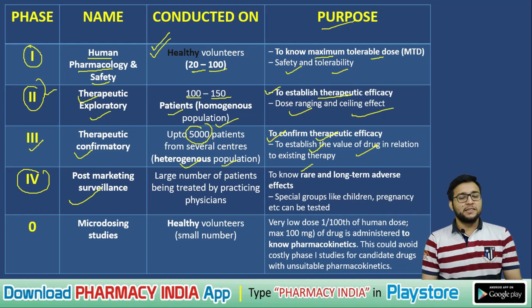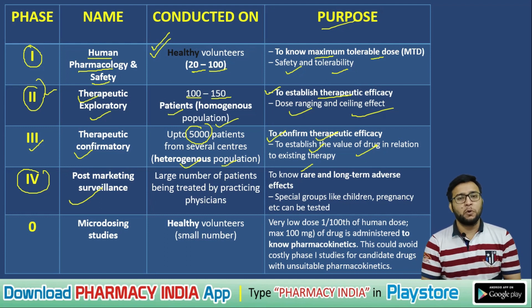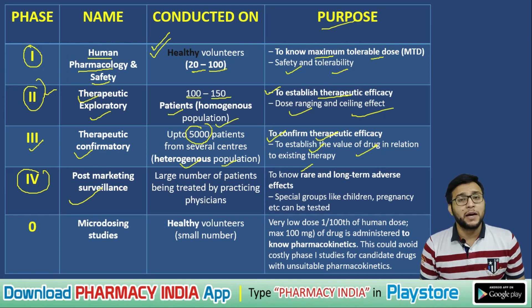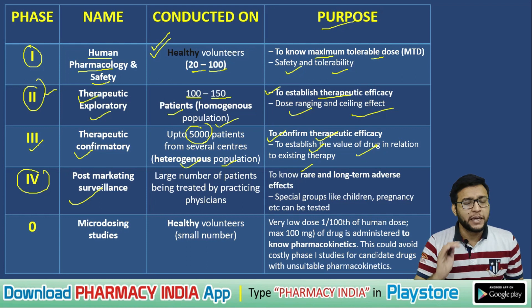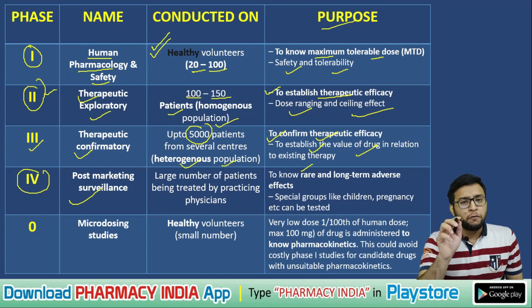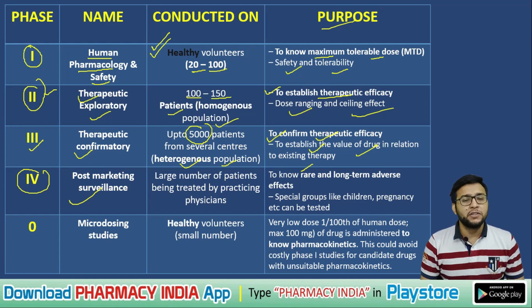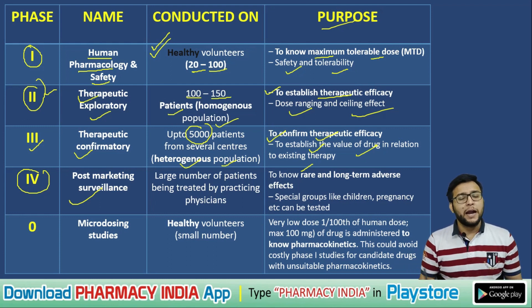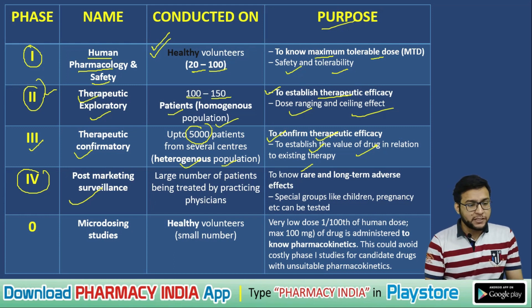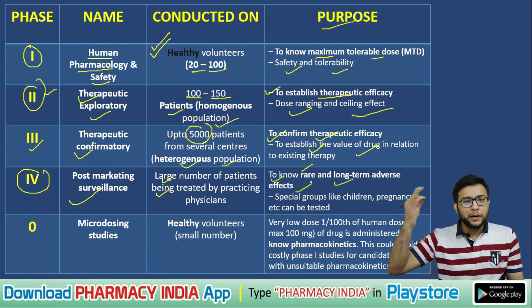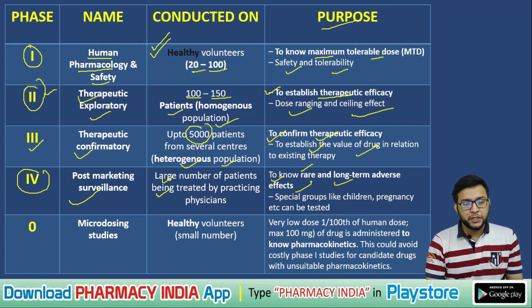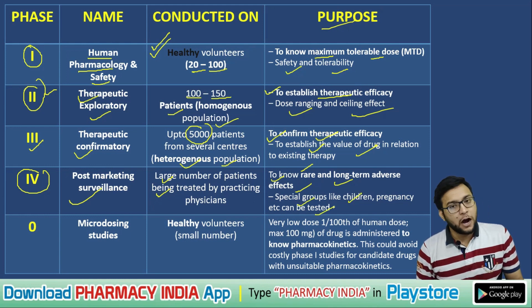Phase 4 is the Post-Marketing Surveillance phase — a very common exam question asks which phase involves post-marketing surveillance. A large number of patients are treated in Phase 4, with no specific fixed number given. The purpose is to know rare and long-term adverse effects. Special groups like children and pregnant women can also be tested in this phase.